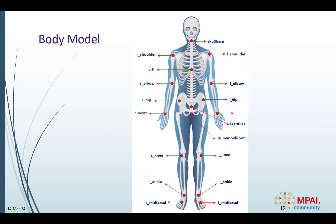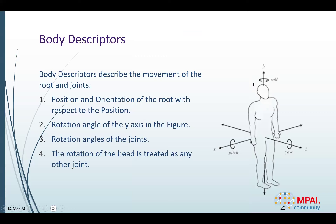For the avatar, we use the standard representation defined by the HNIM standard, which describes the body in terms of a hierarchical set of joints connected with segments. For the reference skeleton, it also defines exactly the number of joints, the number of segments, and the naming convention. The body descriptors describe the movements of the avatar as a sequence of body postures, each defined by the position and orientation of the root of the hierarchy, and then by the rotation applied to each joint. The head, as a relevant component in the videoconferencing use case, corresponds to one of the joints of the model and is treated accordingly.